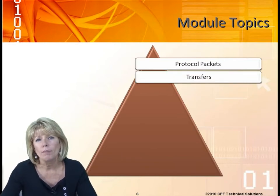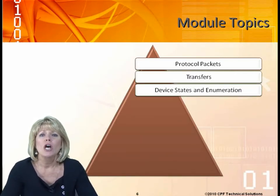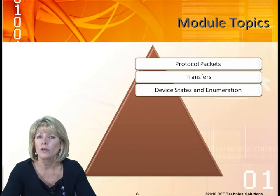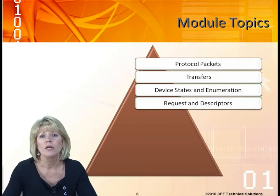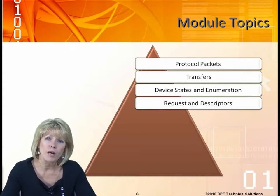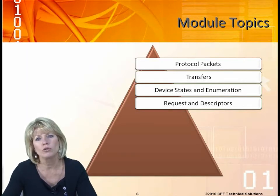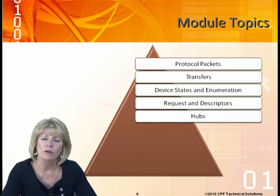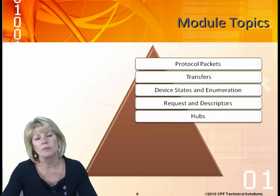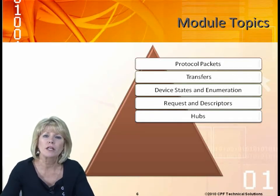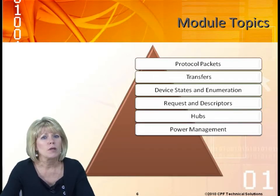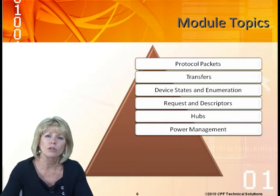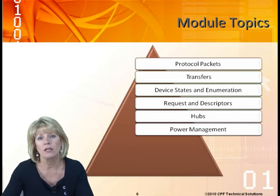We'll look at how transfers are done with a more efficient transfer model in 3.0. We'll talk about device states and enumeration — just like device states were in USB 2.0, we'll look at the new device states, especially in the context of power management. We'll look at required and optional device requests, and we'll look at descriptors and how those are parsed by the host to understand the device. Hubs have a big role in USB 3.0 as well — we'll look at how hubs manage not only the SuperSpeed side but also the USB 2.0 side. Power management had major changes in USB 3.0, with great improvements and new power states added.